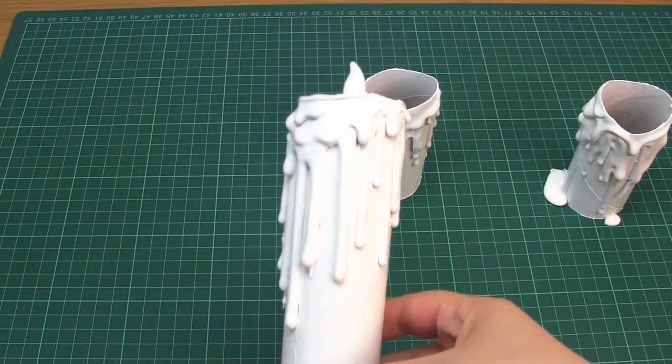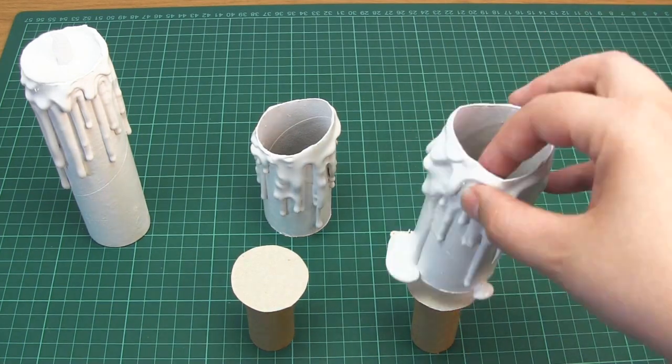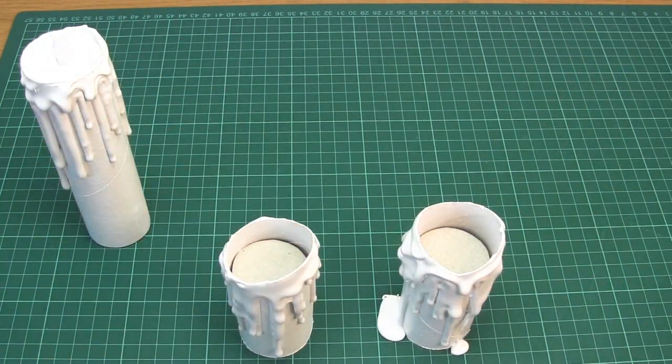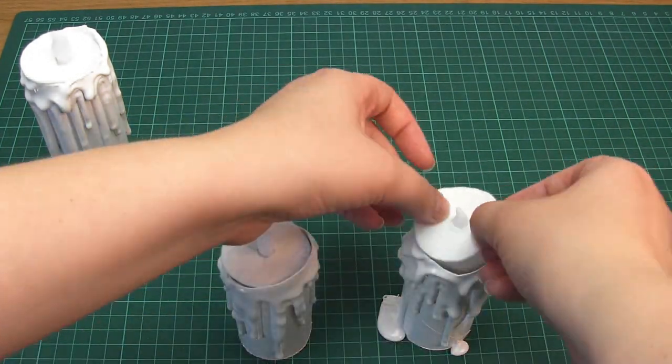Optionally, add shadows and age the candles by applying a black paint and water mix, then immediately wiping with kitchen towel. I personally prefer them as is.